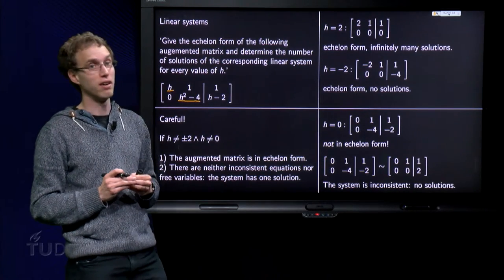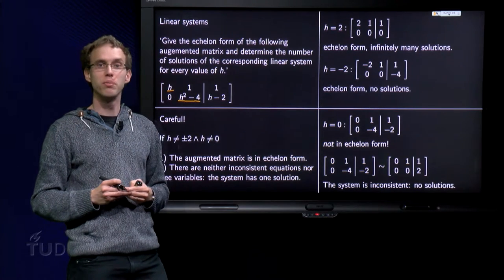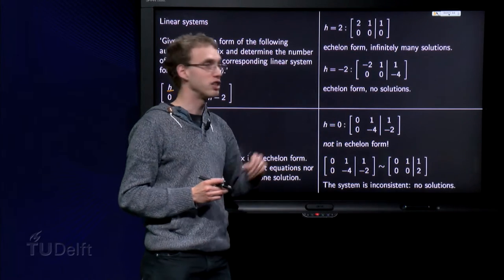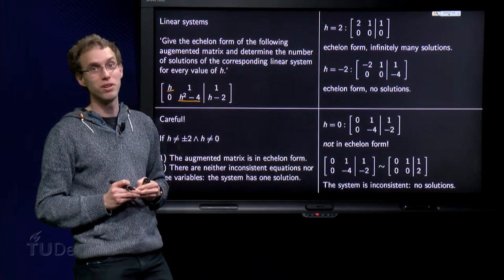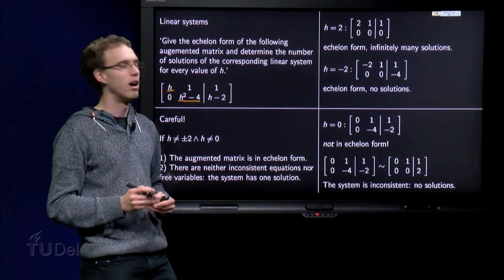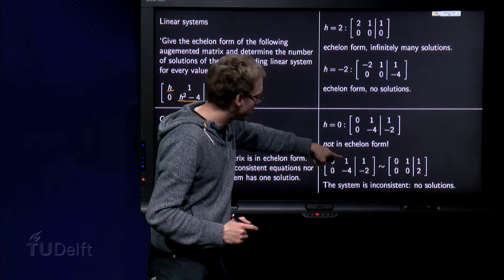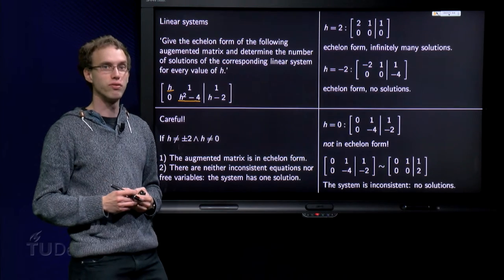And then we have to be really careful. We could say, ok, you have a free variable, so I have an infinite number of solutions. Uh-uh, that's wrong, because we are not in echelon form yet. You can only determine the number of solutions of a system if you are in echelon form. Ok, now it's only one step. Let's do this one step, you add 4 times the first row to the second row, and then we are in fact in echelon form.